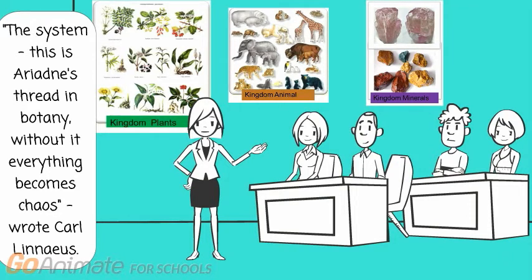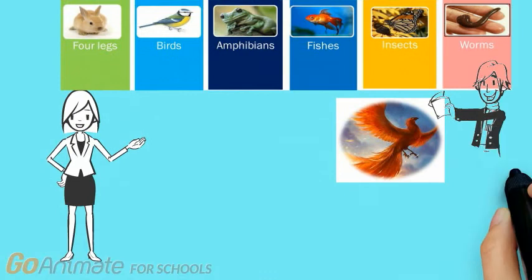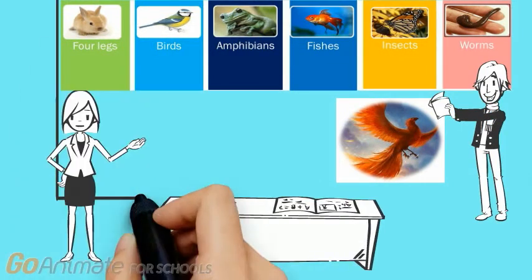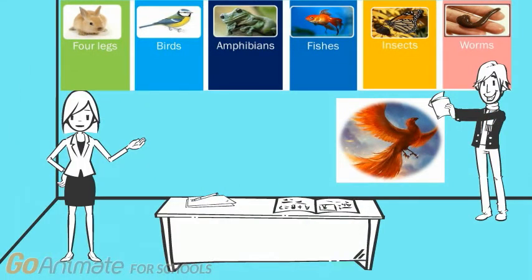He grouped known species into three kingdoms. As Linnaeus wrote: 'This system is Ariadne's thread in botany — without it, everything becomes chaos.' Animals, for instance, he represented on two pages in six columns, each one named after one of Linnaeus' classes. Besides these six classes, Linnaeus set off half a column for the so-called paradoxes, which included mythical animals like the unicorn, the griffin, the phoenix, the dragon, etc.